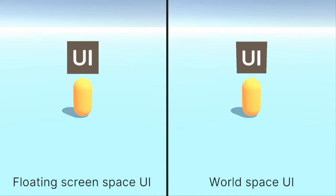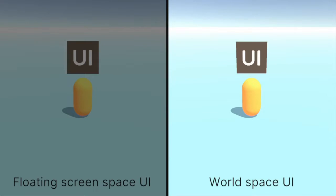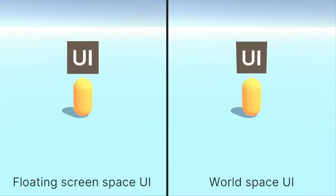Welcome! Let's assume we want to have a UI float above the capsule, like you can see here. How can we achieve that? I think there are two main methods, which I will call FloatingScreenSpaceUI on the left and WorldSpaceUI on the right. These two methods have certain pros and cons, and we should choose depending on what our project requires. Let's see how they differ in order to make the best choice for our project.